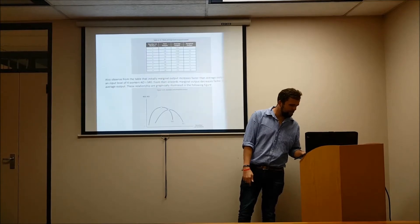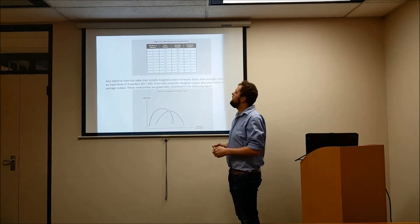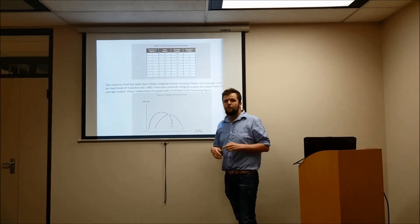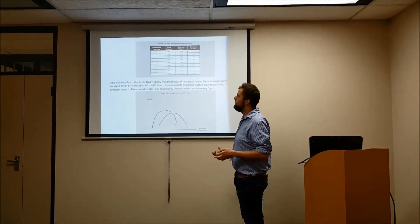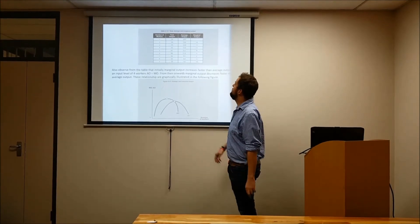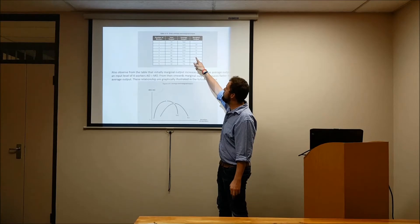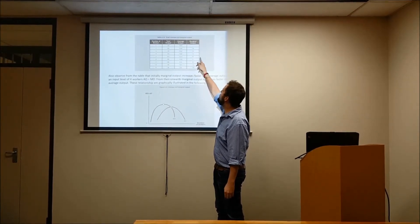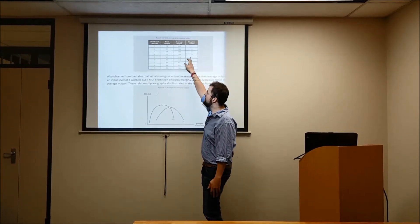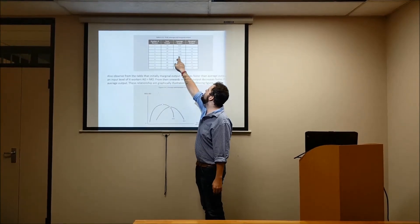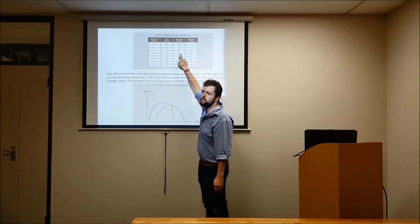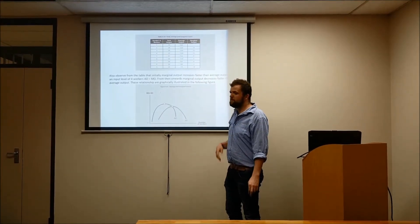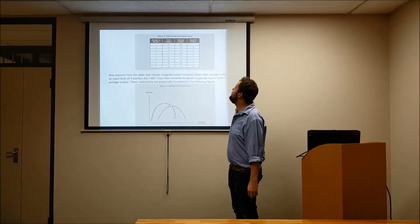Looking at this diagram on top of the table — as you can see, we have the number of workers, total output, average output, and marginal output. Very important to note: marginal output will always increase faster than average output, up until the point where both reach their maximum. Average output increases from 10 to 12, while marginal output increases to 14. Then average output goes from 12 to 14, and marginal output from 14 to 15. You reach a maximum at four workers where average and marginal output equalise — average output is at its maximum there, but marginal output actually reached its maximum before that.